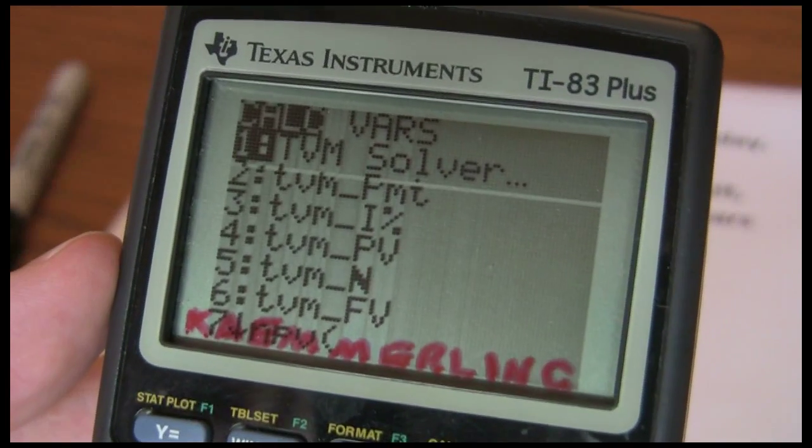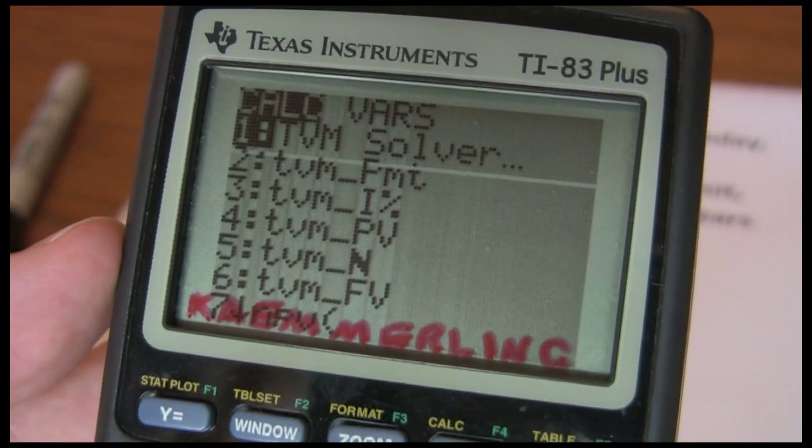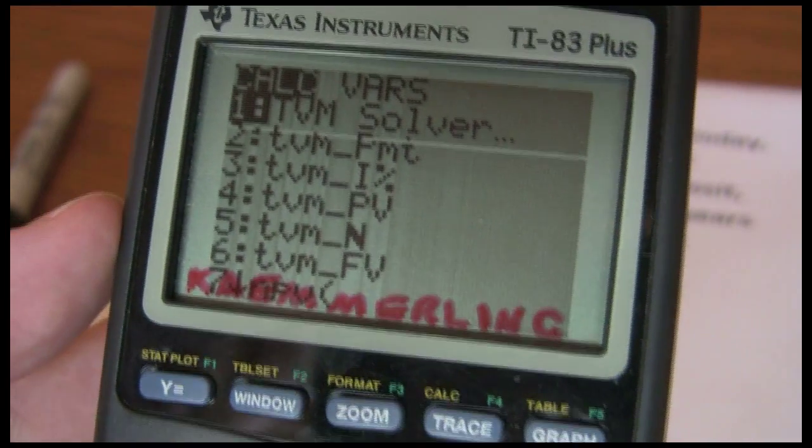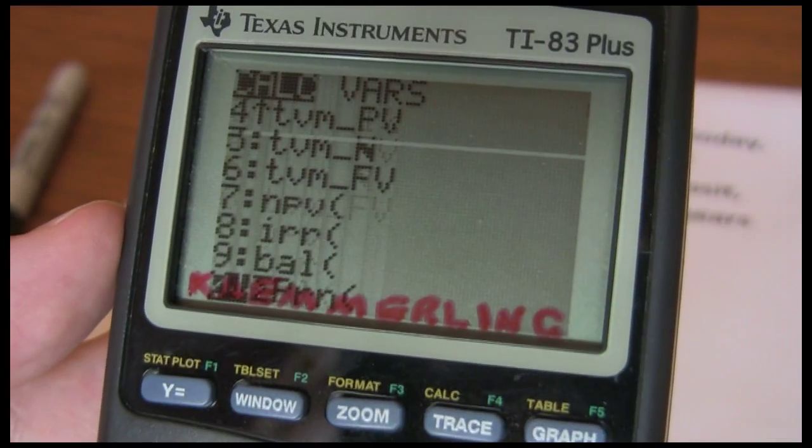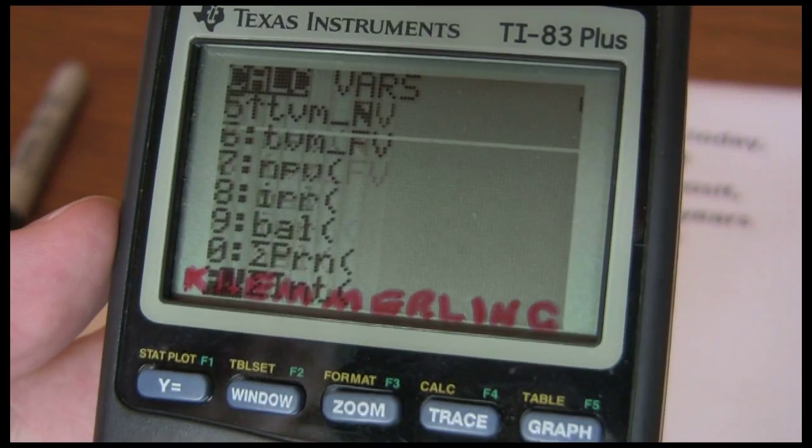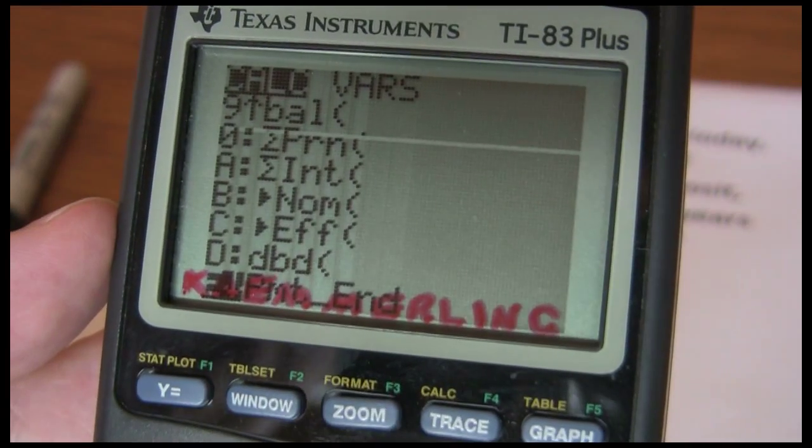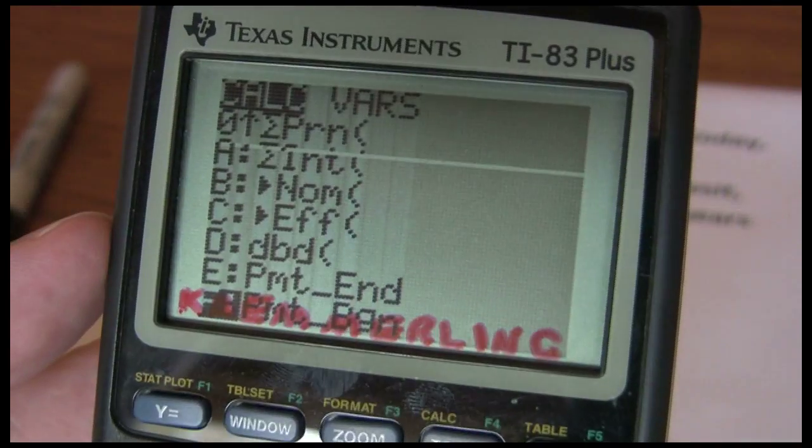You'll see several different time value of money applications. One of which is TVM Solver, that's the main one we're going to use for the five key approach. If you scroll down, you'll see a net present value and an internal rate of return, which we're also going to use, and an effective interest rate, which we're going to use in later videos.